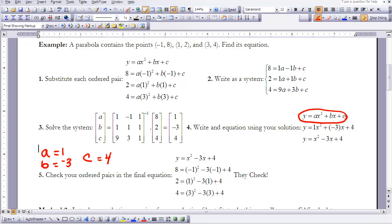Now, I want to make sure that I've done everything correctly. So I go ahead and I check my ordered pair in my final equation. As you can see here, negative 1 squared minus 3 times negative 1 plus 4 does equal 8, and so on. All of those check out. So I know that I have been successful.